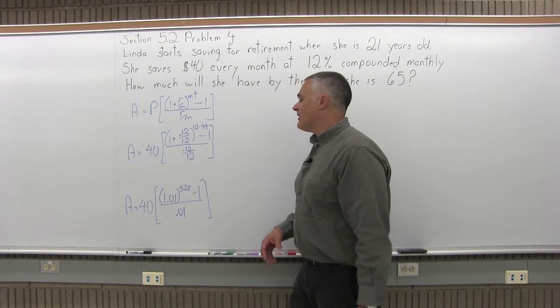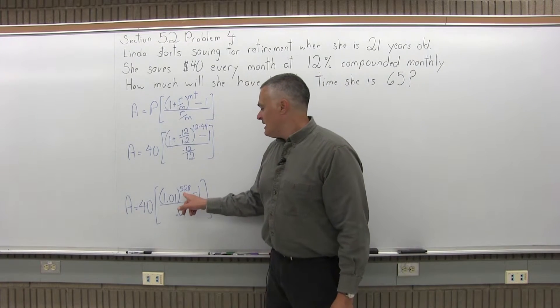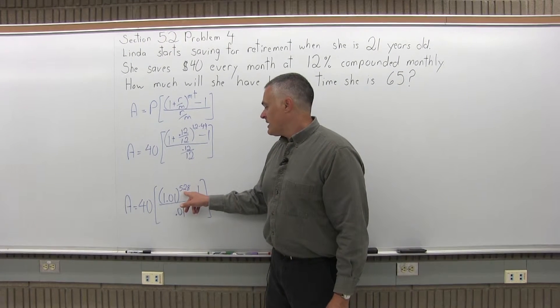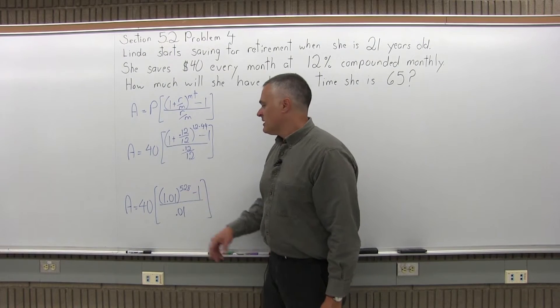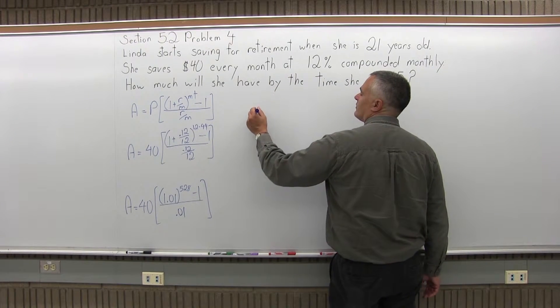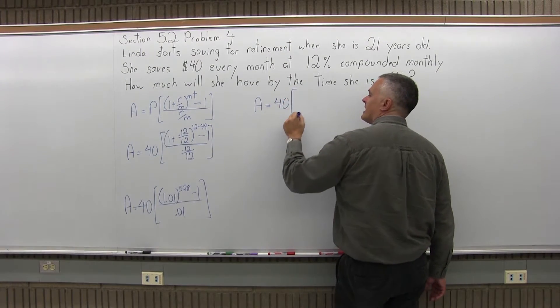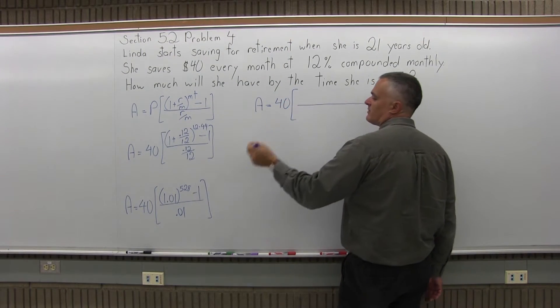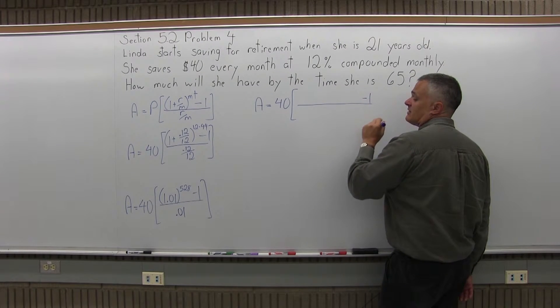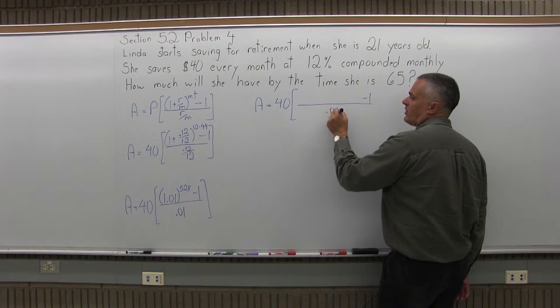So the next thing I have to do to finish the computation is calculate the really big exponent on the parentheses. So in the next part of the formula that I calculate, I'm going to have A equals 40 times some brackets. In the brackets, I'm going to get some result from my big exponent. There's going to be a minus 1 at the end of the number, and then the denominator is still 0.01.